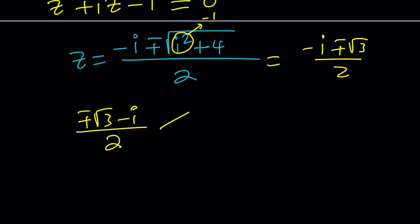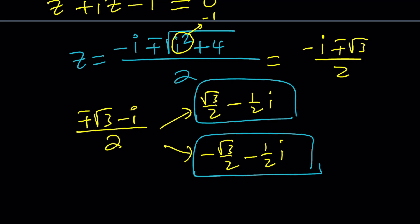We can split this into root 3 over 2 minus 1 half i or negative root 3 over 2 minus 1 half i. Notice that the imaginary part doesn't change. The real part is negated because of the plus minus sign. Now these seem to be the solutions, but are there any other solutions? Let's explore a little bit more and we need to make sure our solutions satisfy the original equation.